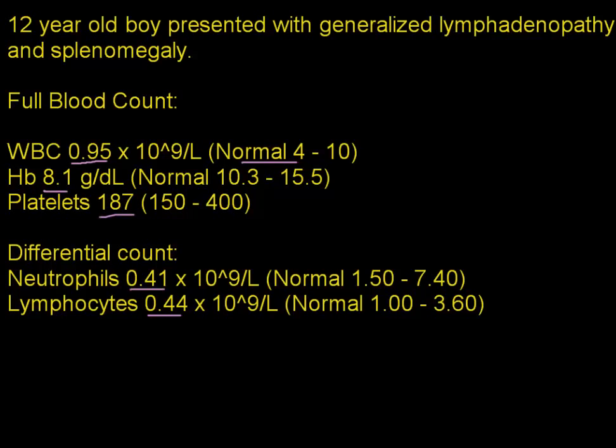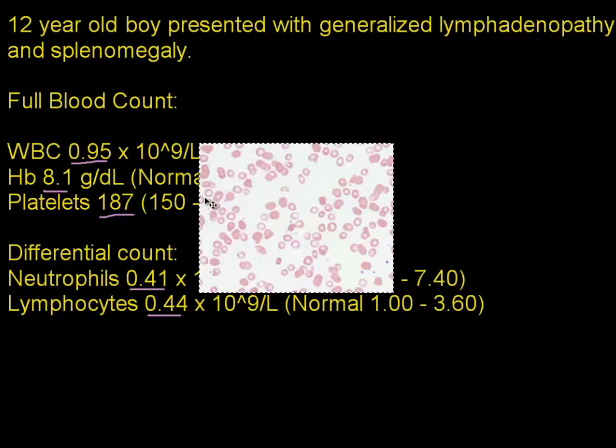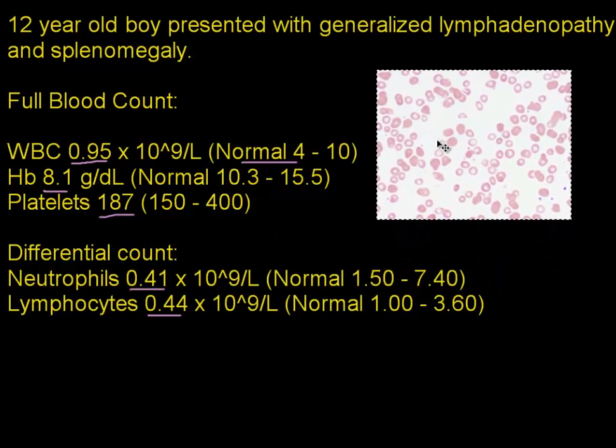With this generalized lymphadenopathy and splenomegaly, there was a strong suspicion that he may have a leukemia and a peripheral blood smear was done. If you look at this representative sample of his smear, you can see a lot of red blood cells all over the place and some blood platelets as well. But you don't really see any white blood cells or leukemic cells.